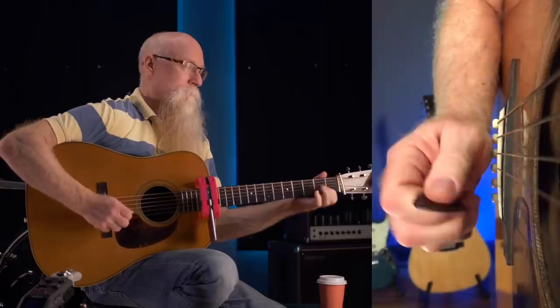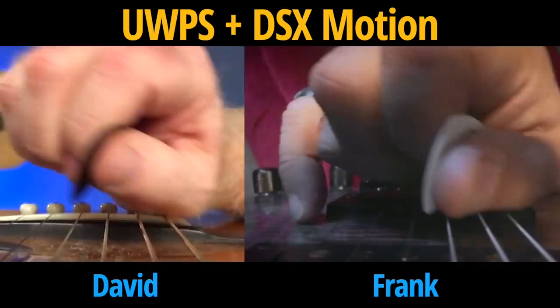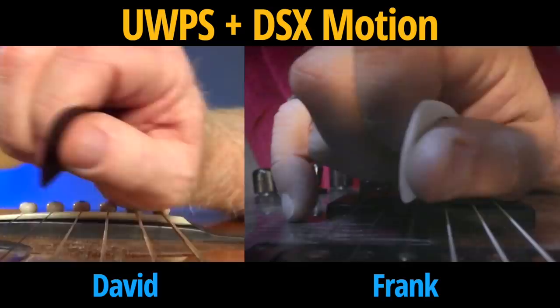When you look at pure alternate players like David Greer, who do downstroke escape motion, you will often see an upward pick slant when they do it. How amazing is this? Two best of the best players operating in completely separate musical styles, each figuring out a fundamental alternate picking technique by intuition alone. That's what the best players do.